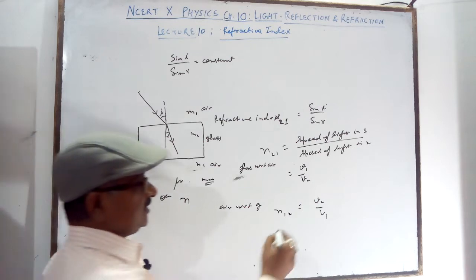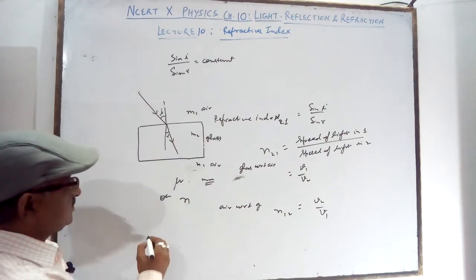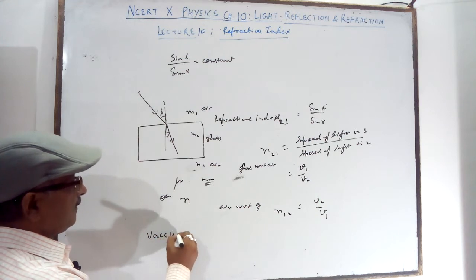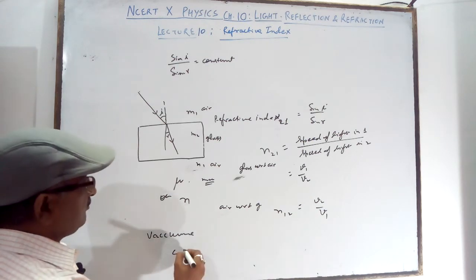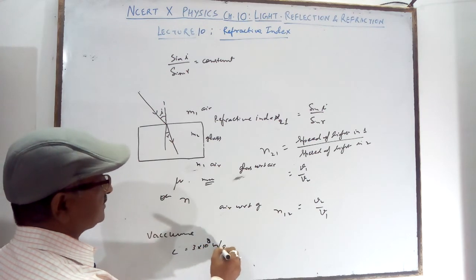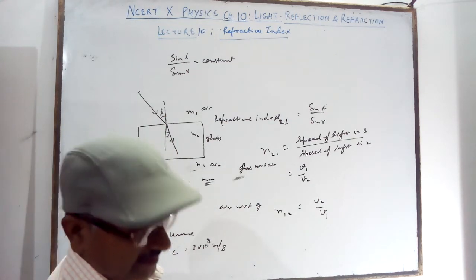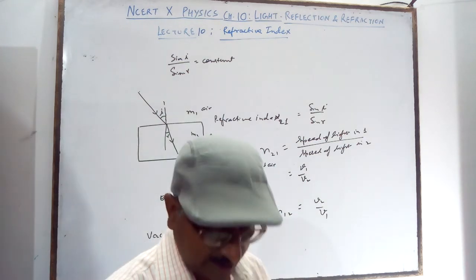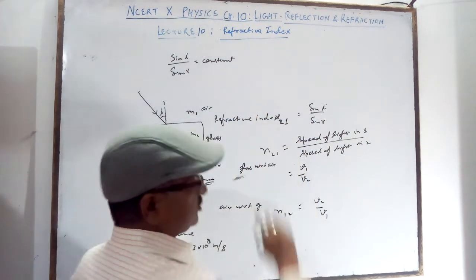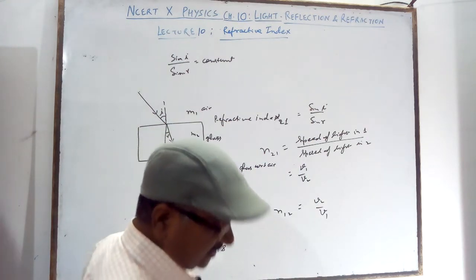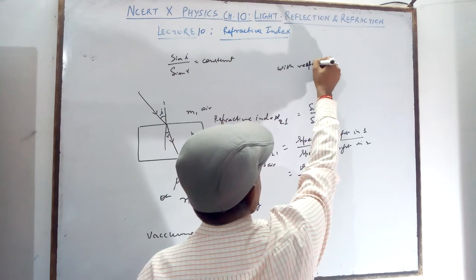It is the speed of light. We know the speed of light in the vacuum is equal to C, which is 3 × 10^8 meter per second. So if we take the vacuum as the place of air, then at the place of air you can take vacuum. Glass with respect to vacuum, or any medium you want, Medium 2 with respect to vacuum.